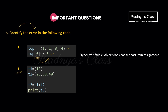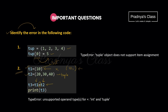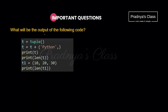Now the second question. Look at this tuple creation — it is wrong. Whenever we create a tuple with a single element, the comma is a must. Since the comma is missing, Python considers t1 as an integer. t2 is a tuple. When we try to concatenate them, we get an error because both operands must be the same data type. The error is: 'TypeError: unsupported operand types — integer and tuple.'